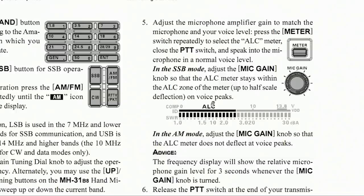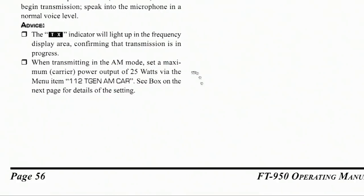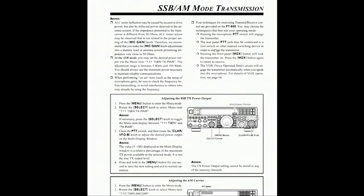Excellent advice. Adjust the mic gain and keep the voice peaks at about 50%. By the way, that's with the compressor off and into an antenna that has an SWR of about 1.5 to 1 or so. On the next page they discuss that, and it's the only manual I've seen where this comes up.